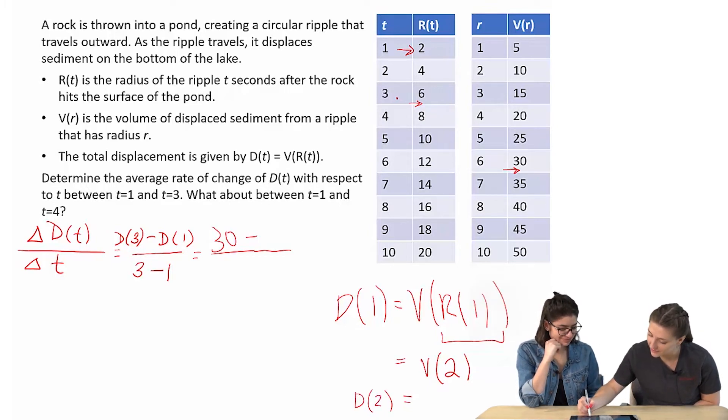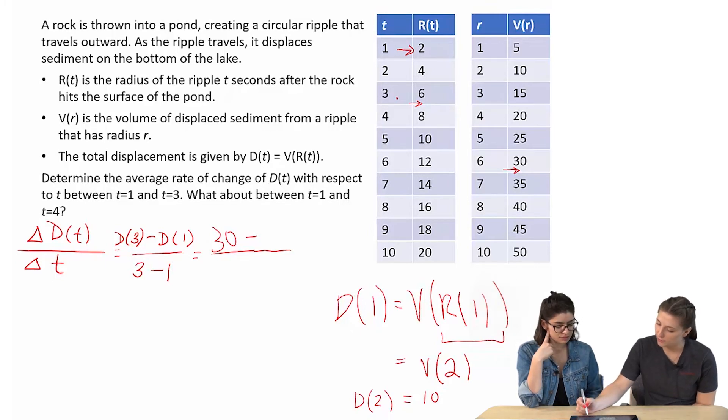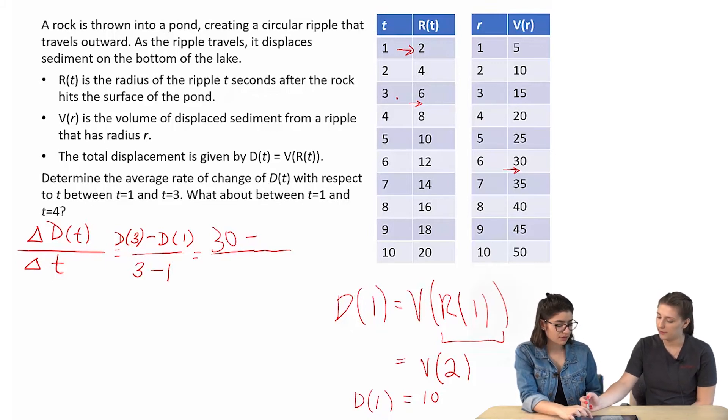So D(2), V(10). Okay. Be careful though, because V(2) is 10, not D(2). Because we're still evaluating D(1). Oh, so V of... Wait. Oh, so D(1). Yeah, I just, I didn't write it. Okay, but we were originally doing D(1) now. Okay.